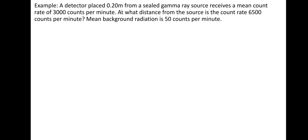Example question: a detector placed 0.2 metres from a sealed gamma ray source receives a mean count rate of 3,000 counts per minute. At what distance from the source is the count rate 6,500 counts per minute? The mean background radiation is 50 counts per minute. Background radiation isn't subject to the inverse square law, so we need to subtract 50 from both values — giving us 2,950 and 6,450 as the values we work with.